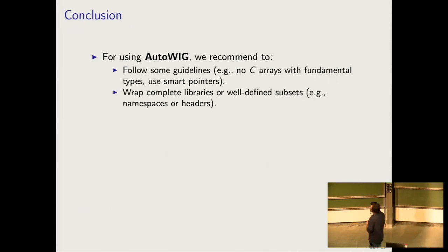Just some recommendations to use AutoWig. It's better to follow some guidelines. With Boost.Python, we cannot use C arrays, and it's better to use smart pointers for memory management, but you can still define your own system using the Python code. And it's better to wrap either complete libraries or well-defined subsets with namespace or precise header. It's just in order to minimize the code you are producing in the control step.